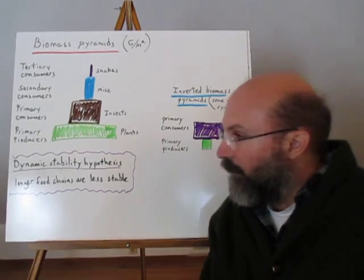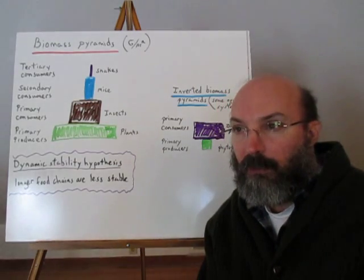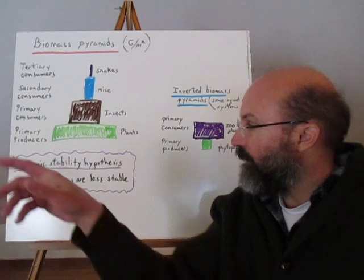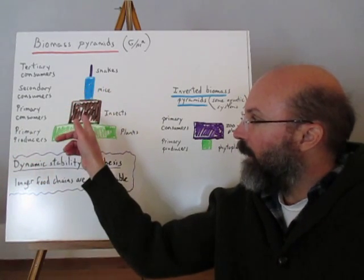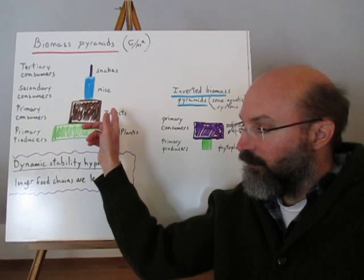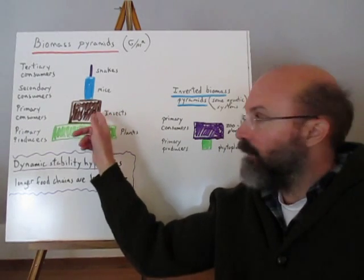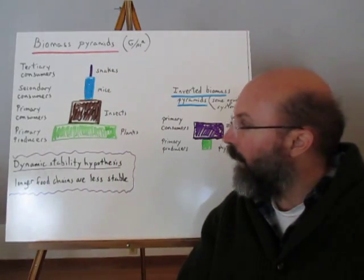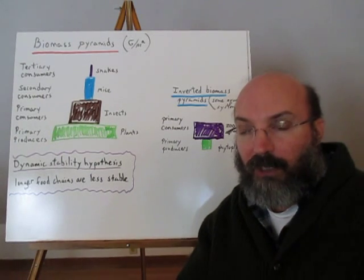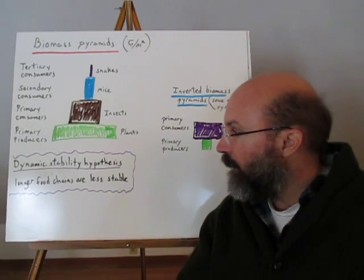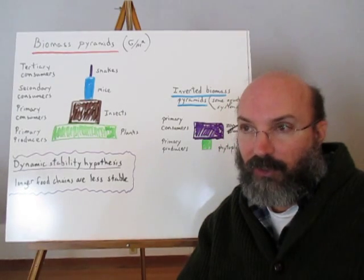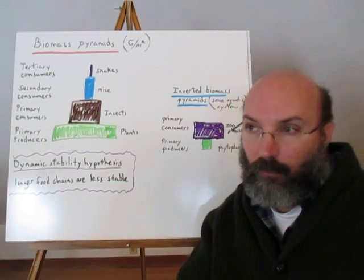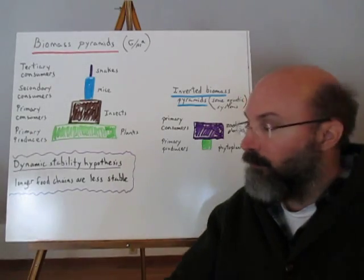There's another idea about why food webs and food chains are limited to four or five levels, related to stability. The dynamic stability hypothesis states that environmental disturbances cause food shortages for top predators — snakes, hawks — causing their populations to collapse, so food chains don't extend very long. The bulk of research evidence supports the energetic hypothesis, but the dynamic stability hypothesis is also out there to be tested.